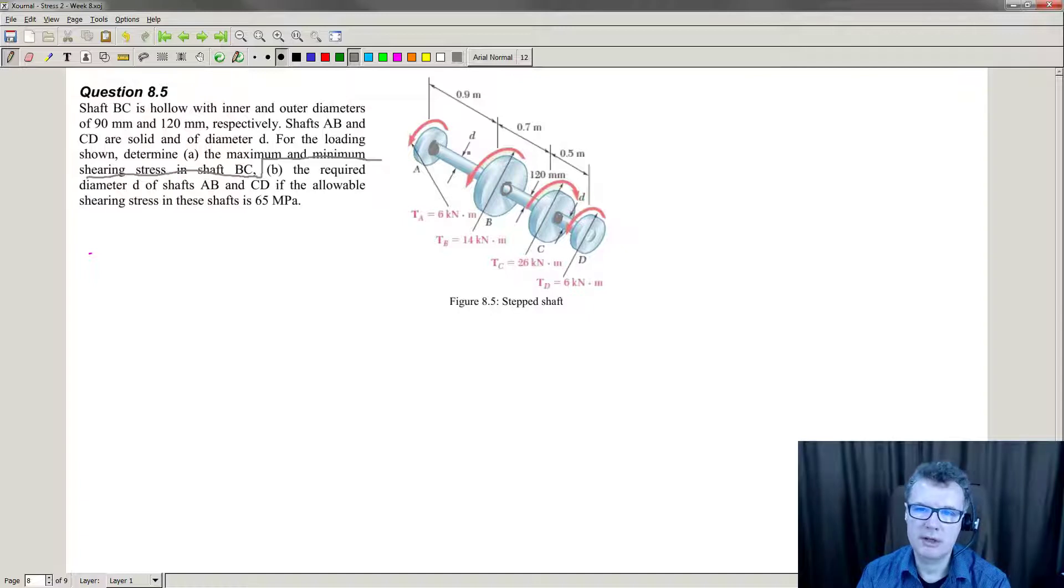We've got these kind of disks attached. I just imagine their diameters is irrelevant, but they are all creating different torques. This disk here is applying a torque of 6 kNm and it's going anti-clockwise. This one here, 14. This one here, 26 positive turning. And this one here, 6.